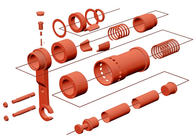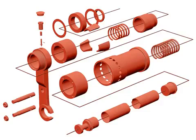Exploded assembly drawings are not very common in a set of production drawings. They are best utilized to show both the individual pieces of the assembly as well as the order in which they are assembled. Exploded assembly drawings are typically used in maintenance manuals, parts catalogs, or other information given to the general public. With the advent of computer-aided design, or CAD, it has become easier than ever to generate exploded-view drawings.